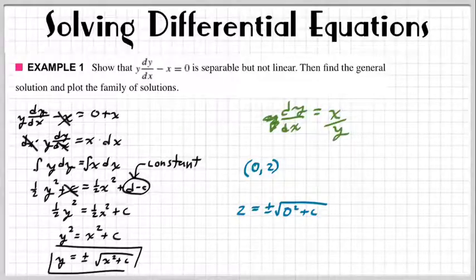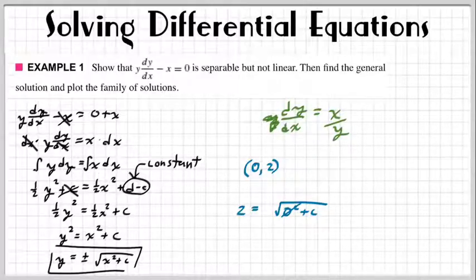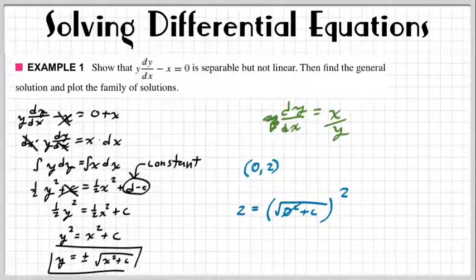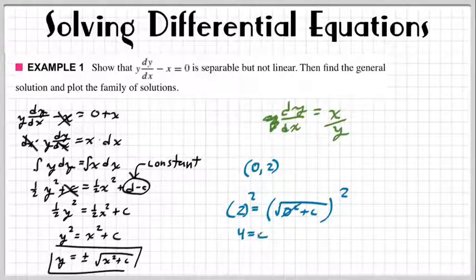Alright, so let's get C alone here. That square root of 0 or the 0 squared doesn't do anything. And then we actually don't need to think about the plus or minus right now. We can think about that later. So how would I get that C alone? I would square both sides.